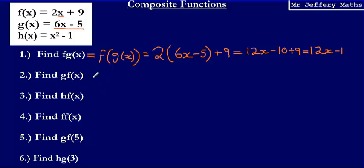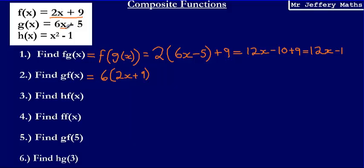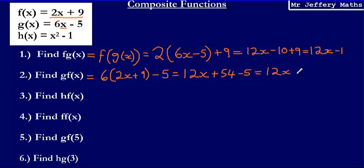On to question 2. This time it's the other way around — we're going to be substituting f(x) into g(x). So we're substituting 2x plus 9 into 6x minus 5. We get 6 multiplied by (2x plus 9), substituting in 2x plus 9 for the x, and then minus 5 afterwards. Expanding and simplifying gives us 12x plus 54 minus 5, which tidies up to 12x plus 49.